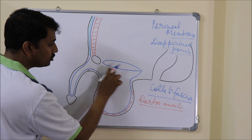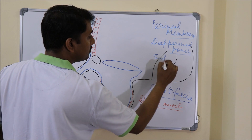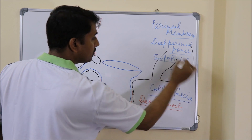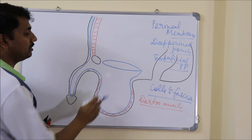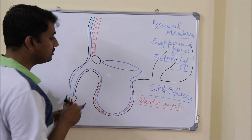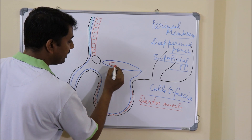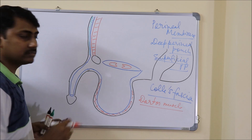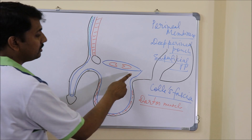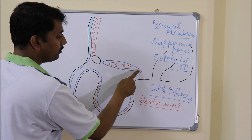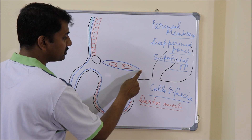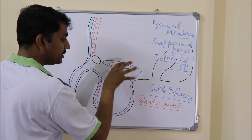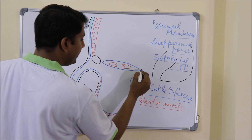The space between these two fasciae is known as the deep perineal pouch, and the space below this perineal membrane is known as the superficial perineal pouch. In the deep perineal pouch there are two muscles: anteriorly the sphincter urethrae and posteriorly the deep transverse perineal muscle. At the posterior aspect, the superior fascia becomes continuous with the inferior fascia, and this point where the two fasciae meet is known as the perineal body.